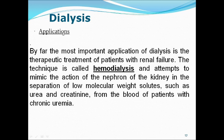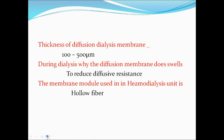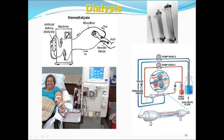Application: if you use a membrane to purify blood, that is referred to as hemodialysis. It is a technique and therapy treatment of patients with renal failure that attempts to mimic the action of the nephron of the kidney — the separation of low molecular weight solutes such as urea and creatinine from the blood of patients with chronic uremia. The thickness of the diffusion dialysis membrane is usually in the range of 100 to 500 micrometers. During dialysis, the diffusion membrane swells to reduce diffusive resistance. The membrane model used in the hemodialysis unit is referred to as hollow fiber.